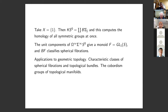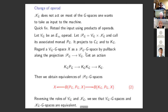If X equals a point, then KS-naught is just a disjoint union of classifying spaces of symmetric groups, and this computation gives simultaneously the homology of all symmetric groups at once. For an algebraist, computing the homology of Sigma-J is hard work, but topologically you get all of it for free with far more structure. Similarly, the unit components of the zero-space of the sphere spectrum give a monoid called GL1S, whose classifying space classifies spherical fibrations, leading to calculations of characteristic classes and cobordism groups.